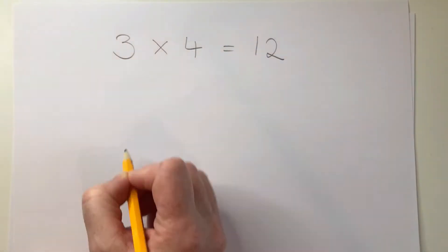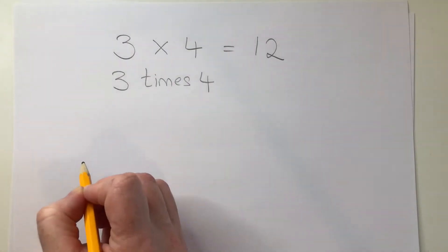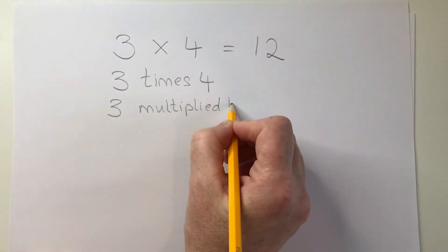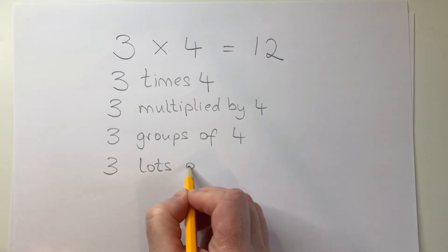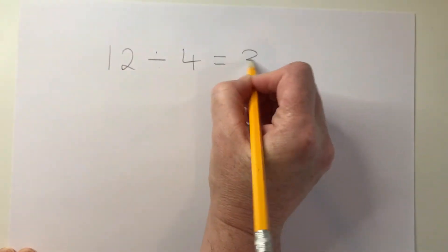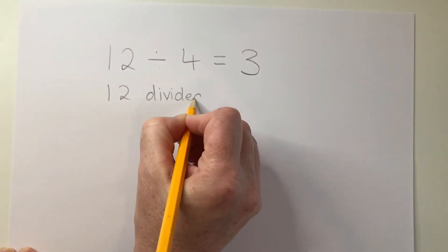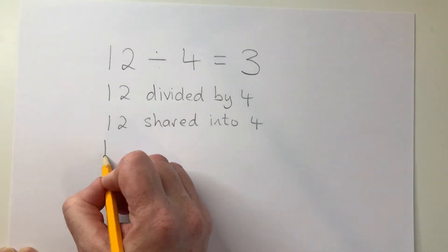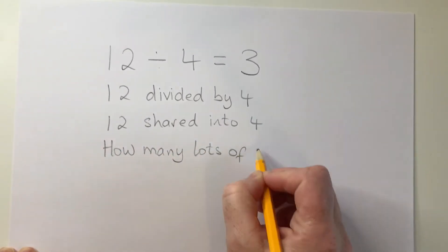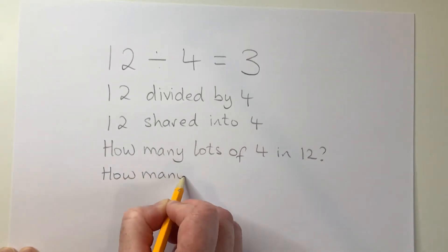When working with children on division and multiplication, try to use a range of words to describe what's happening. This is three groups of four or three lots of four. Likewise, this is 12 divided by 4, but it's also 12 shared into 4, and it's also asking us how many lots of four are in 12 or how many groups of four are in 12.